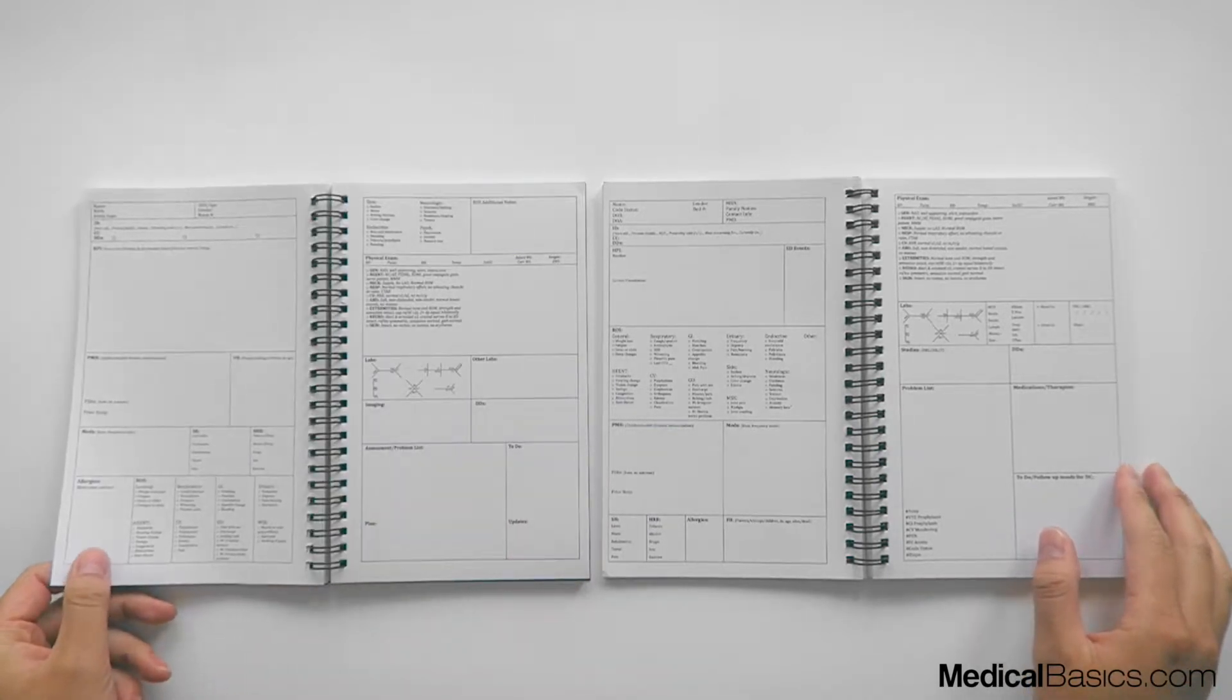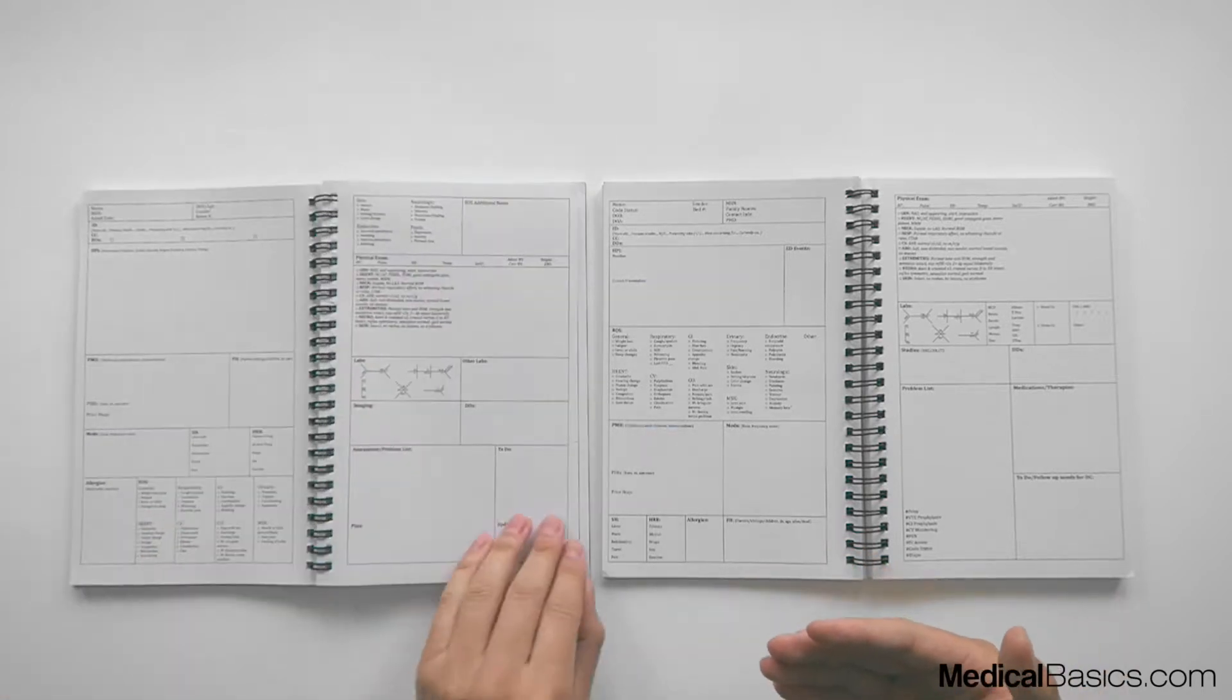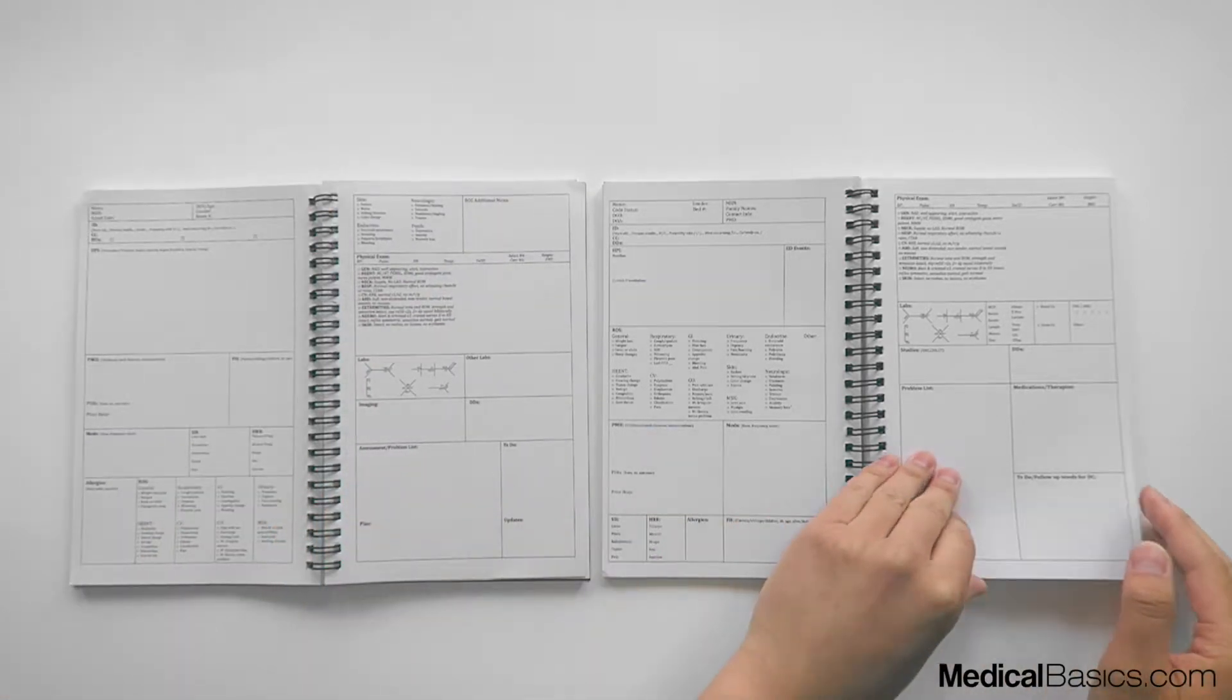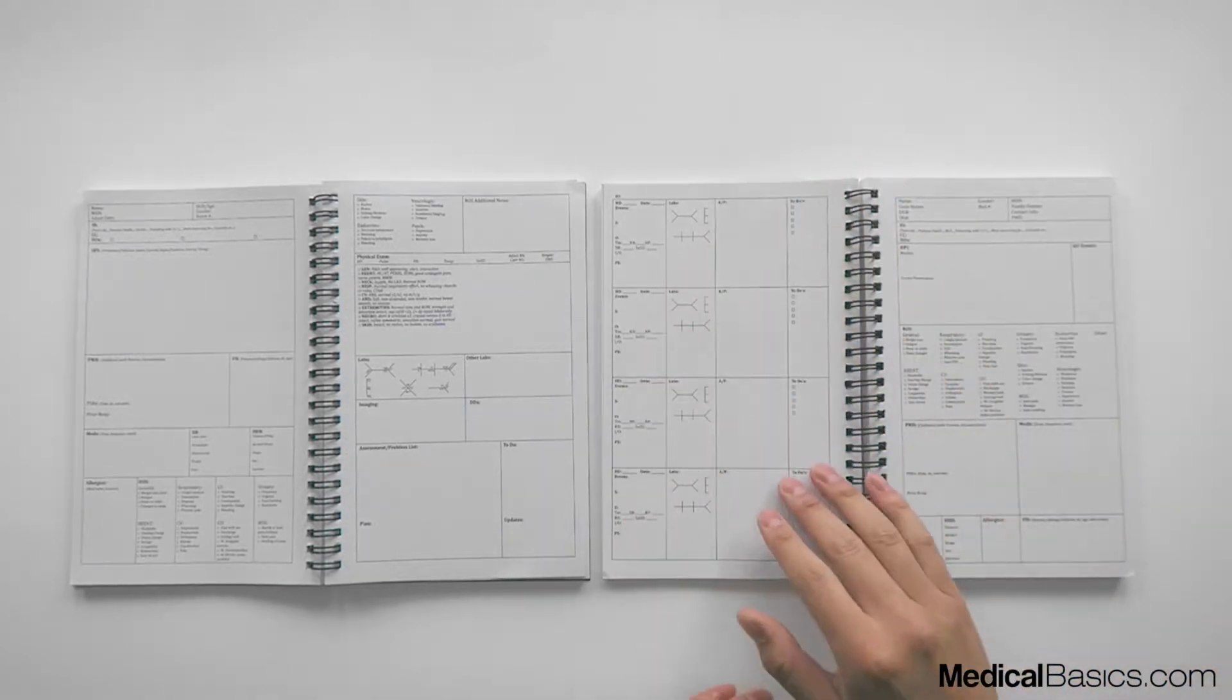When we flip the page for our HMP notebook, it's just the same—a whole new template. This is a two-page template. On our Progress notebook, when we flip the page, we get this four-day soap note.